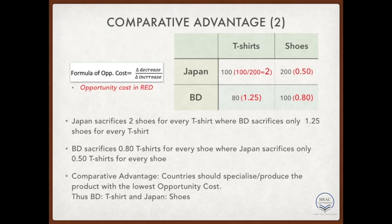From the very first look, you must be thinking Japan is better at producing both things — this is called absolute advantage. However, just because Japan enjoys absolute advantage doesn't mean it won't gain from trading with Bangladesh. And this is where the idea of comparative advantage comes in.